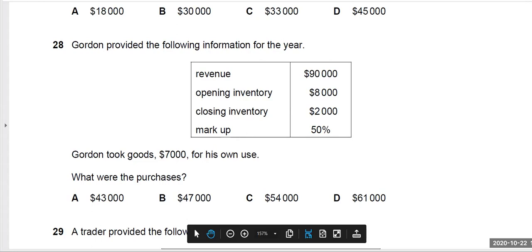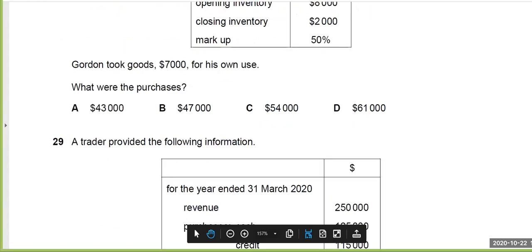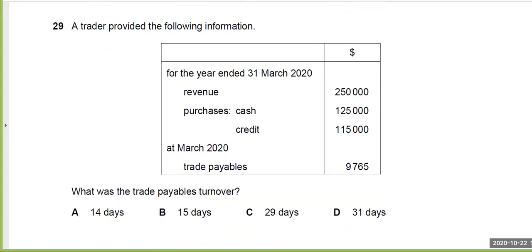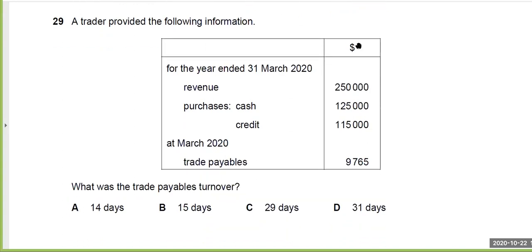Last question is question 29. A trader provided the following information. Revenue, purchases, cash and credit, and trade payables. What was the trade payables turnover?